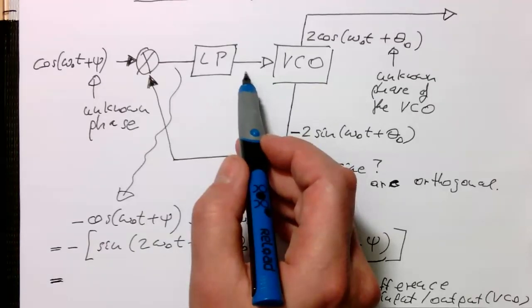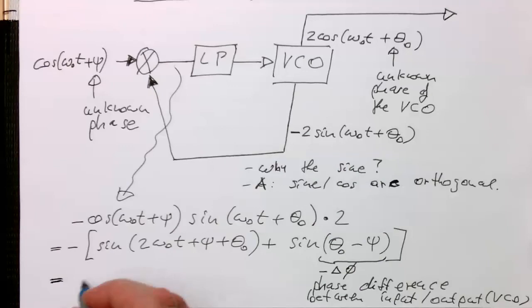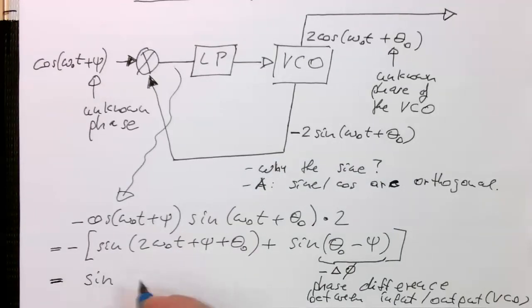So this means that at this point here, if we're doing low pass filtering, after low pass filtering then we are just getting out our sine of delta phi.